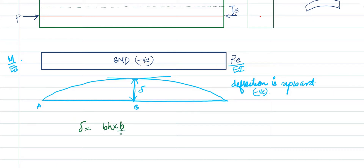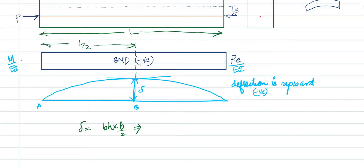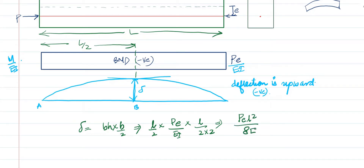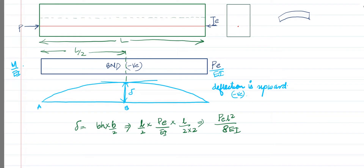Delta equals the moment of the area, that is b·h·(b/2). Here b is the half-span, so b = L/2. Substituting: (L/2) · (P·e / EI) · (L/2 / 2) = (L/2) · (P·e / EI) · (L/4), giving P·e·L² / 8EI. So due to a straight pre-stressing force, delta = -PeL²/8EI — negative because it is an upward camber. The camber value is PeL²/8EI.